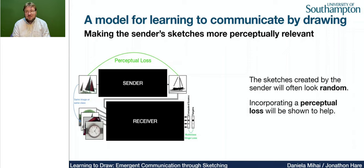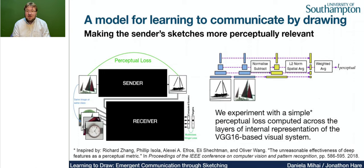One of the problems mentioned earlier is that models can converge to what we call a hashing solution — producing images that look random, even though the communication rate might be quite high. We found that incorporating perceptual loss as an inductive bias helps solve this problem. We use a simple perceptual loss based on computing features across the layers of the VGG16 visual system, taking the normalized difference, computing the L2 norm spatial average, and averaging them to compute a single loss variable to minimize. As the results show, this is very effective.